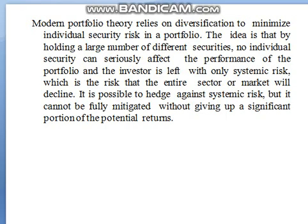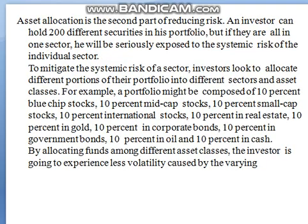Asset allocation is the second part of reducing risk. An investor can hold 200 different securities in his portfolio, but if they are all in one sector, he will be seriously exposed to the systemic risk of that individual sector. To mitigate the systemic risk of a sector, investors look to allocate different portions of their portfolio into different sectors and asset classes.